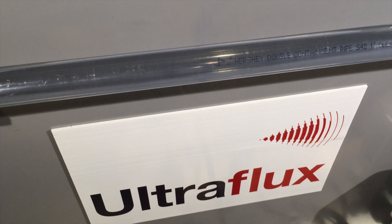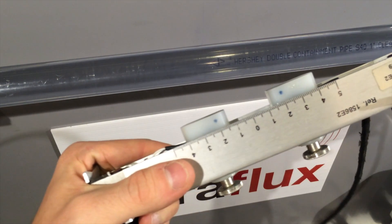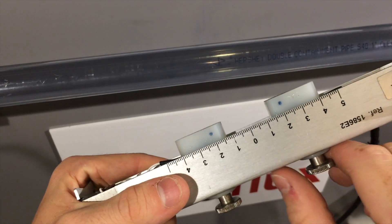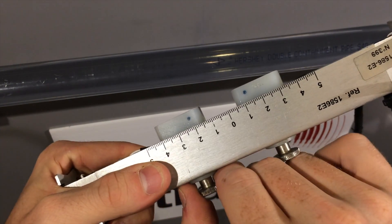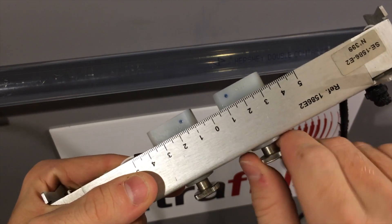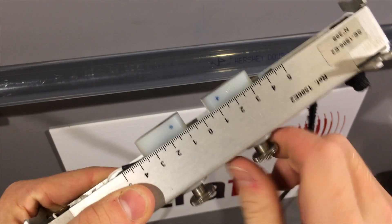Let's place the probes on the pipe. First, adjust the probe distance. Then screw the knobs to lift up the two probes.